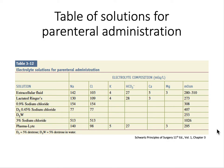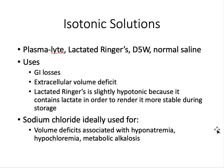The electrolyte composition is what we consider when deciding what to give our patient. Isotonic solutions — Plasmalyte, lactated Ringer's, D5W, and normal saline — are used mostly for GI losses and extracellular volume deficit. Lactated Ringer's is slightly hypotonic because it contains lactate, which provides greater stability during storage. Sodium chloride, or normal saline, is ideally used for volume deficit associated with hyponatremia, hypochloremia, and metabolic alkalosis.